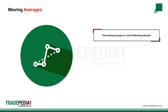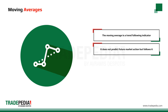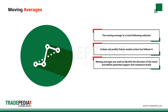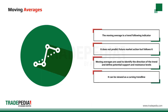The moving average is a trend-following indicator that helps smooth price action and filters out the noise. It does not predict future market action but follows it. Moving averages are used to identify the direction of the trend and define potential support and resistance levels. It can be viewed as a curving trend line.